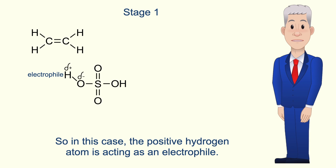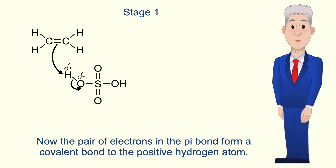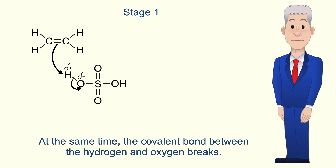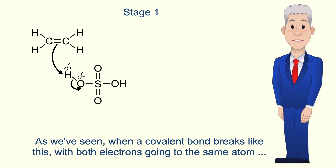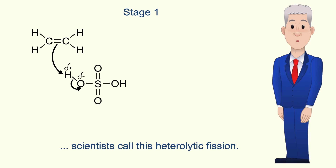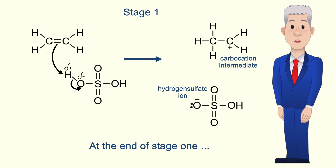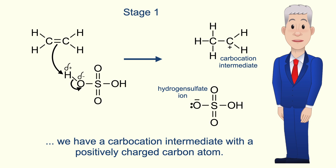The positive hydrogen atom is acting as an electrophile. The pair of electrons in the pi bond form a covalent bond to the positive hydrogen atom. At the same time, the covalent bond between the hydrogen and oxygen breaks, and the pair of electrons now move completely onto the oxygen atom. When a covalent bond breaks like this with both electrons going to the same atom, scientists call this heterolytic fission. So at the end of stage one, we have a carbocation intermediate with a positively charged carbon atom.